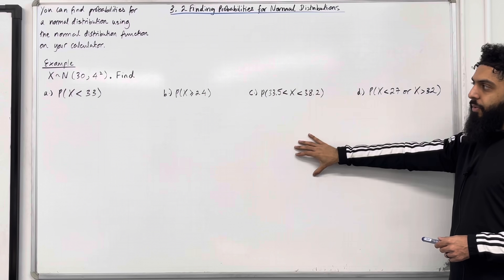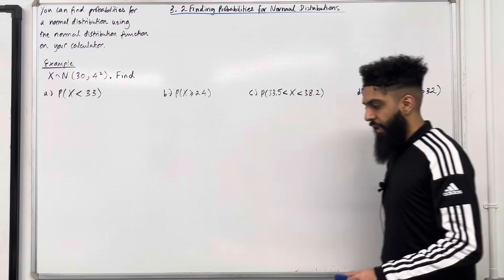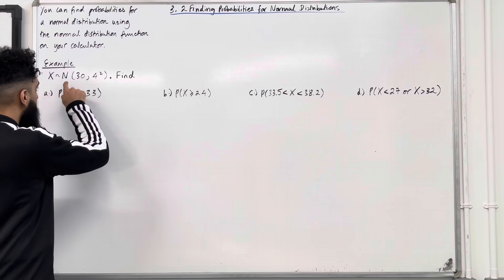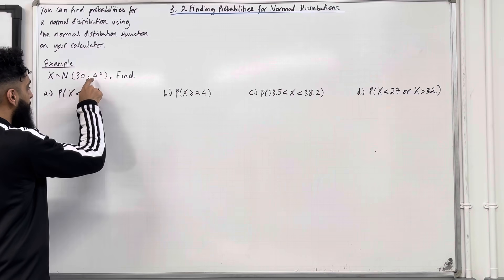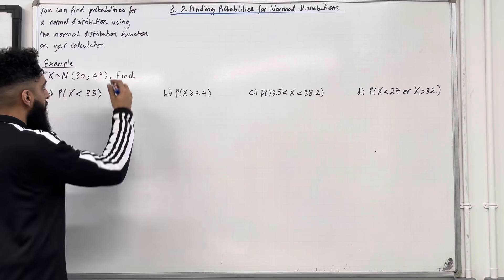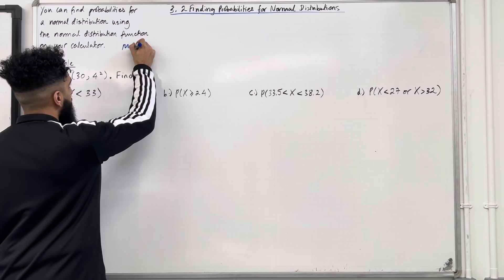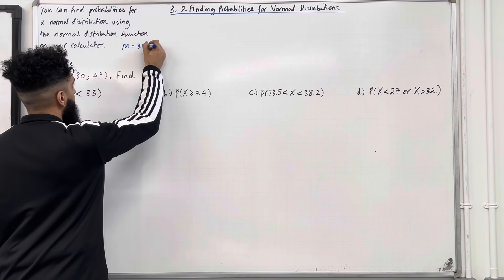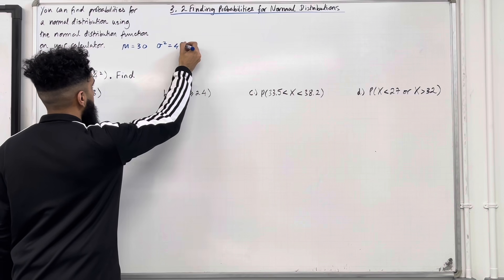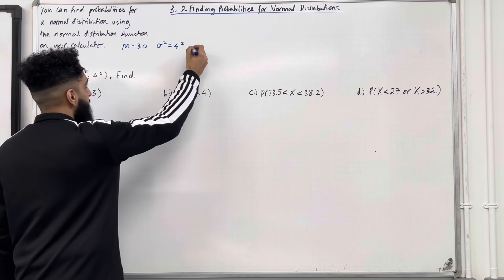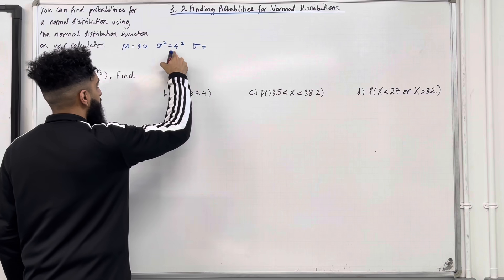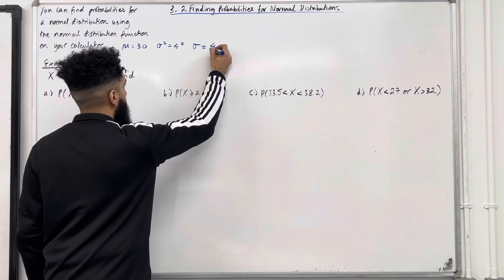Here is my example. X takes on a normal distribution with mean 30 and variance 4 squared. So the mean mu is equal to 30 and the variance sigma squared is equal to 4 squared. The standard deviation sigma is the square root of the variance — square root of 4 squared is just 4.